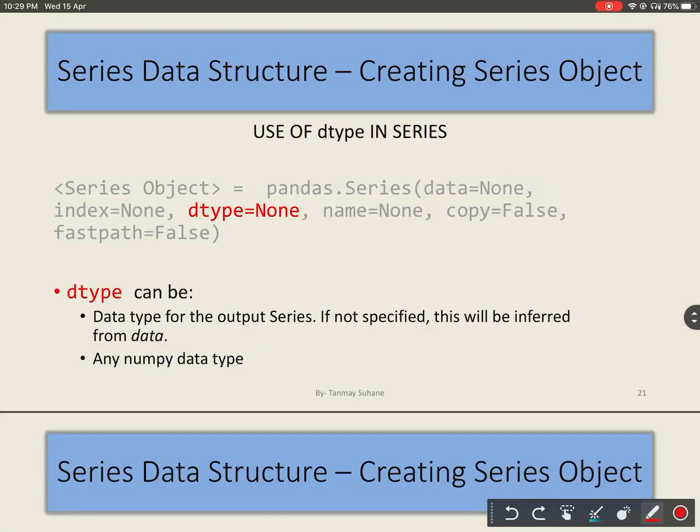Hello everyone, so till now in pandas series we have seen data and index parameters of series object. Today we will see what is the dtype parameter and how to use it.